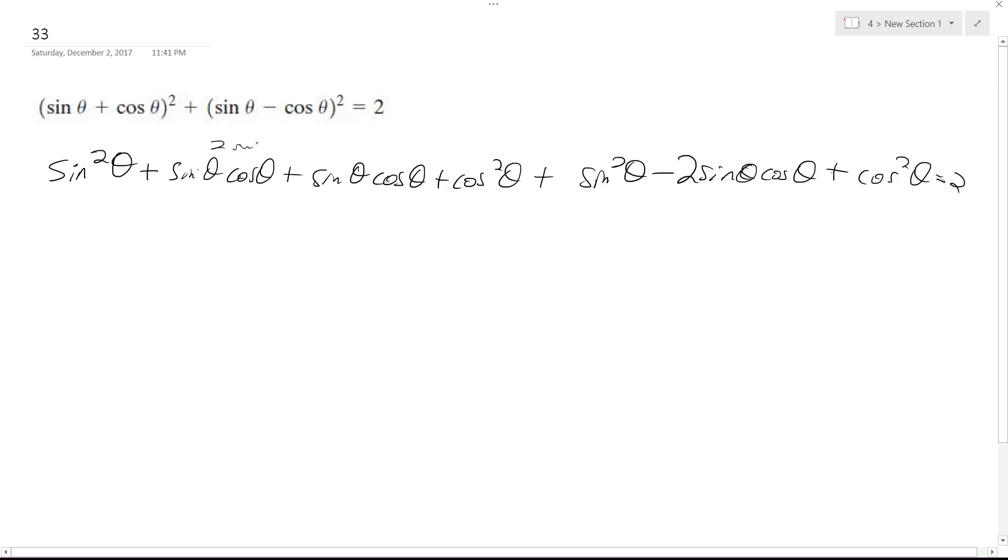So these combine to make two sine theta cosine theta and that crosses out with this. So we're left with sine squared theta plus cosine squared theta plus sine squared theta plus cosine squared theta equals two.